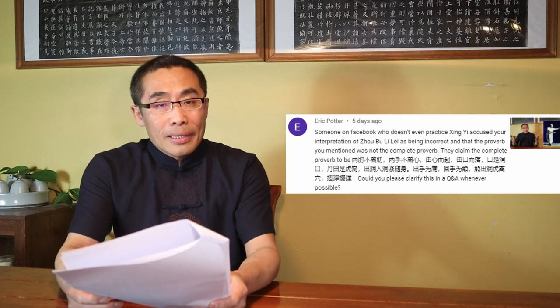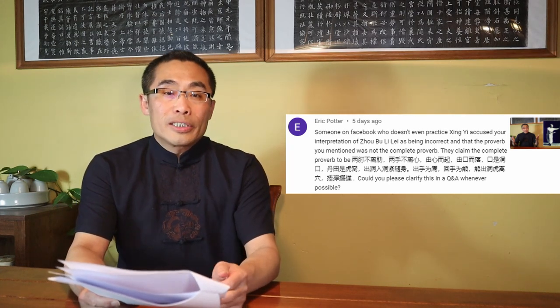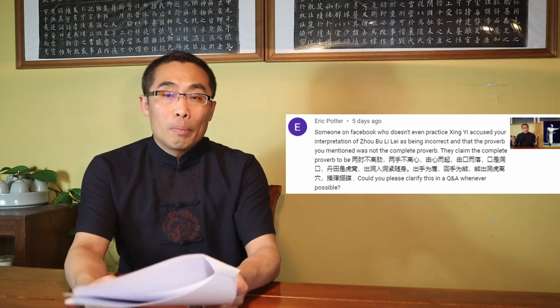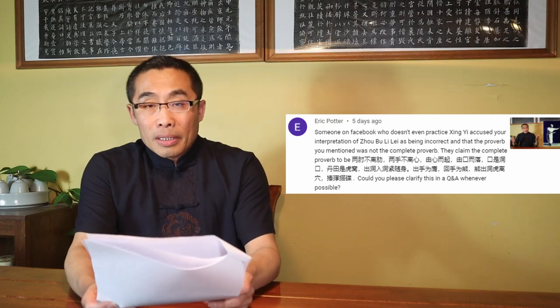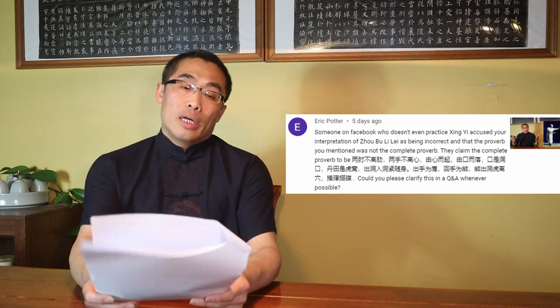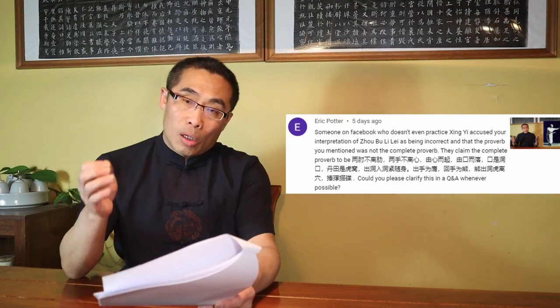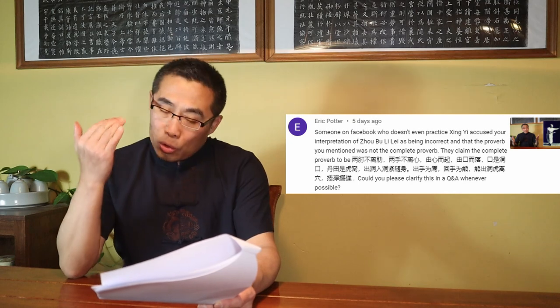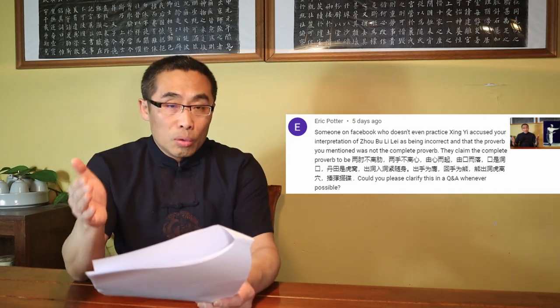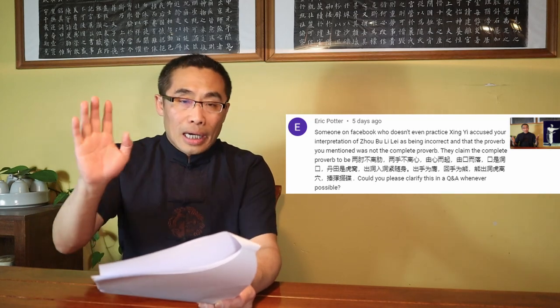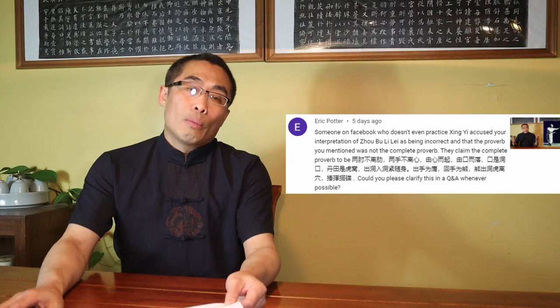First, someone claimed your interpretation of Zou Bu Li Lei was incorrect and that the proverb you mentioned was not the complete proverb. They claim the complete proverb to be Liang Zou Bu Li Lei, Liang Shou Bu Li Xin, You Xin Er Qi, You Kou Er Luo, Kou Shidong Kou, Dan Tian Shi Hu Wuo, Chu Dong Ru Dong Jin Sui Shen, Chu Shou Wei Ying, Hui Shou Wei Xion, Xion Chu Dong Hu Li Wuo, and so on. Could you please clarify this in a Q&A whenever possible?